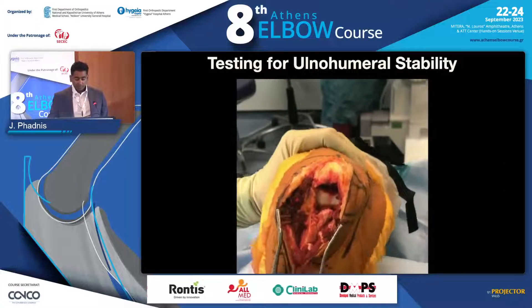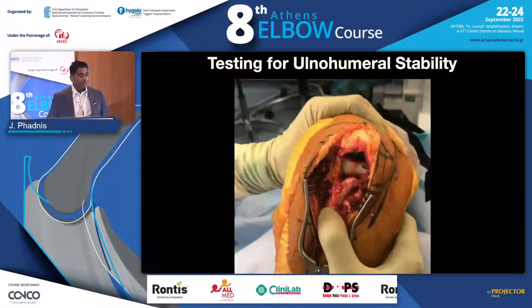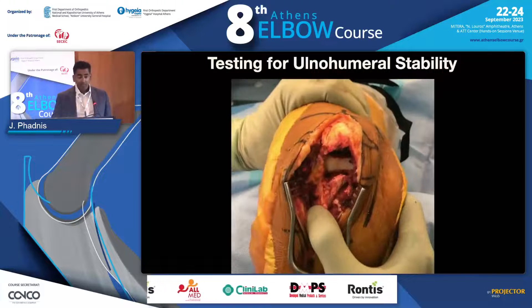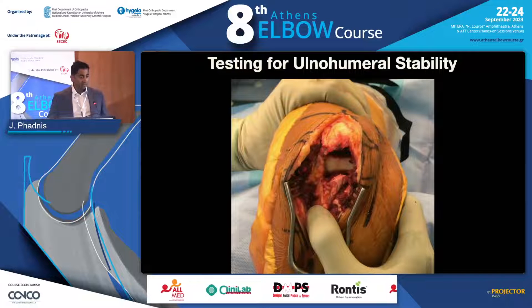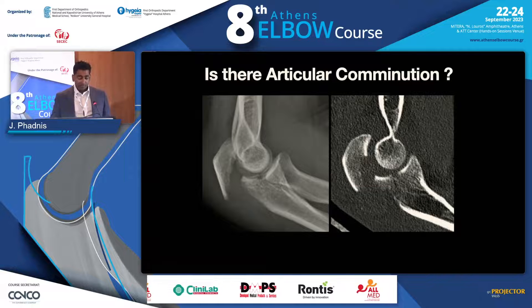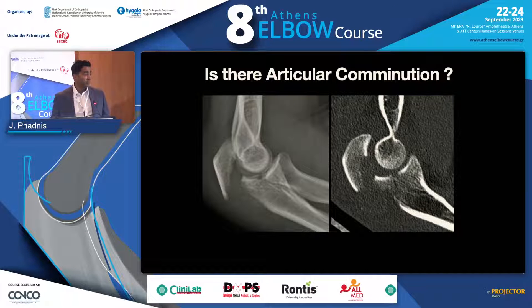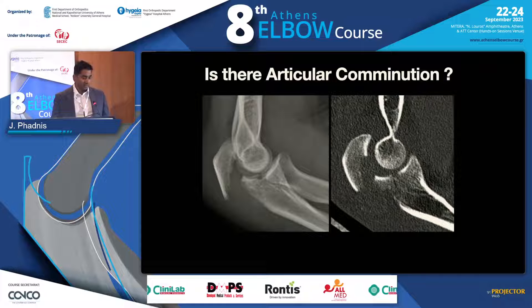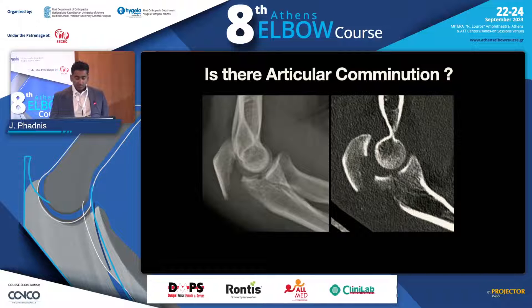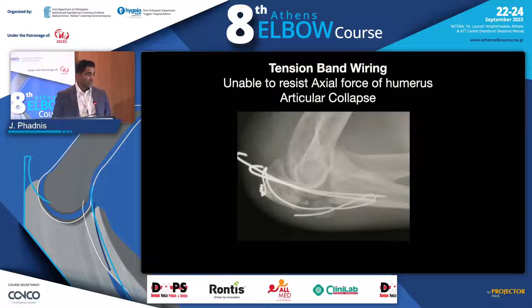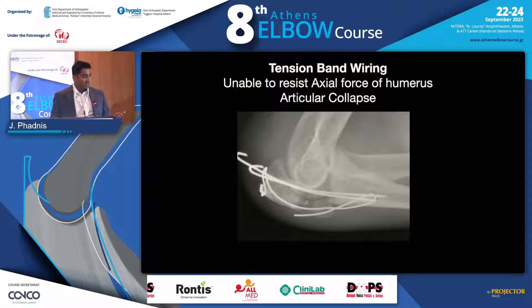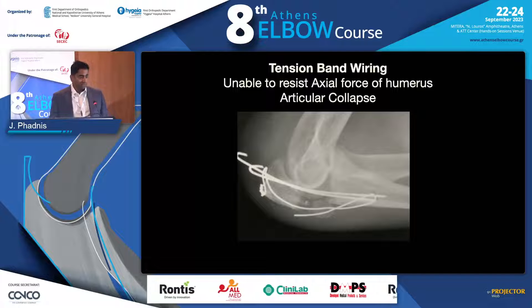Intraoperatively, it's always useful to check for ulnohumeral instability — I'm seeing if the humerus will actually drive through or not. In this case it's not driving through, which tells us the ligaments are intact and this is a stable situation. I'm a big proponent of getting CT scans if there's any articular comminution; it gives you a more thorough understanding and allows better surgical planning. If we fix these fractures with tension band wiring or a suture method, the fixation can't resist ongoing axial forces and comminution, and we get failures.